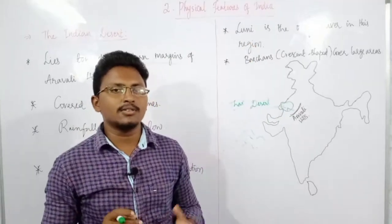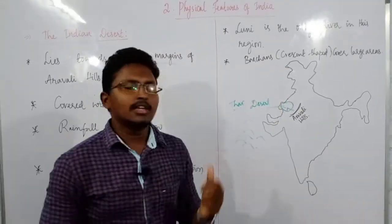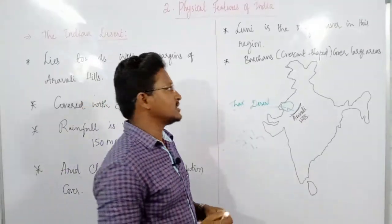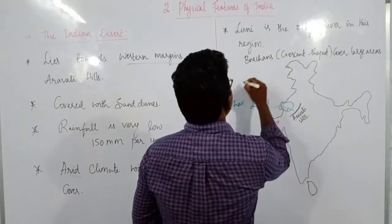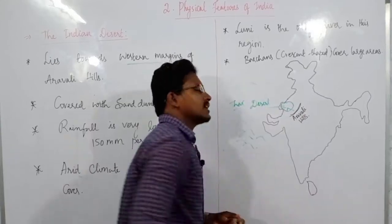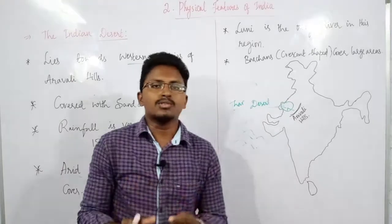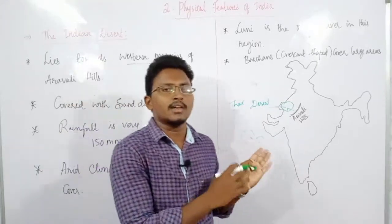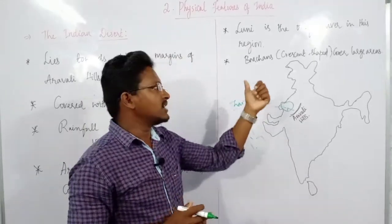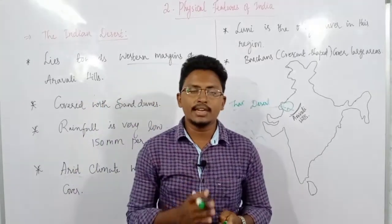The other very important feature of the Thar Desert is that you can find barchans here — most of the area is covered with barchans. Barchans are crescent-shaped, moon-like sand dunes. Crescent-shaped means the shape you see in the moon. So in this crescent shape you can find sand dunes in the Thar Desert. Barchans are also one of the very special features of the Thar Desert, or the Great Indian Desert.